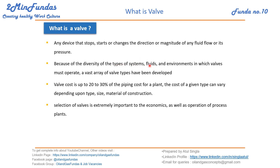Because of the diversity of types of systems, we have so many piping systems in our oil and gas field — fluids and environments in which valves must operate. We have a vast array of valve types that have been developed. A valve is a very important component in our piping section because it costs up to 20 to 30 percent of the total piping cost of a plant. The cost can vary depending on the type, size, and material of construction. Selection of a valve is extremely important to the economics as well as the operation of the process plant.